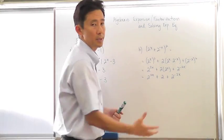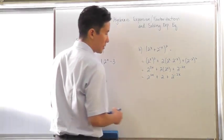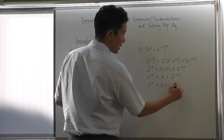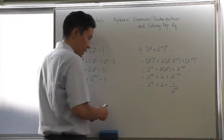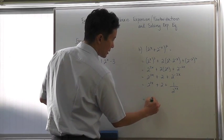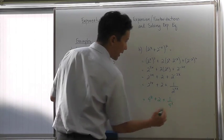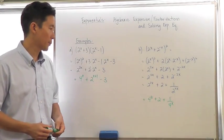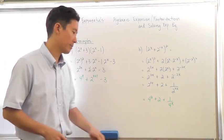This of course is not going to be fully simplified because we have a negative exponent. So we have to do one more step: 2 to the 2x plus 2 plus 1 over 2 to the 2x. In the same respect, if you wanted to, you could change this as 4 to the x plus 2 plus 1 over 4 to the x. Either one of those two would be acceptable, and it's important to see both as equivalent expressions.